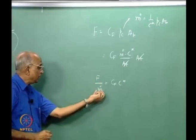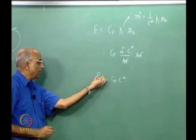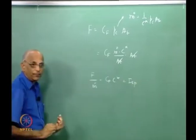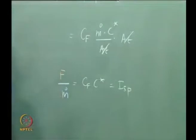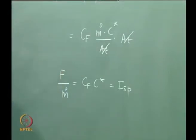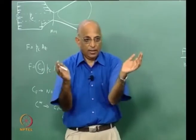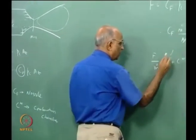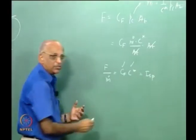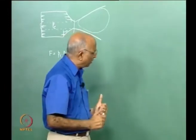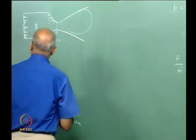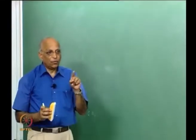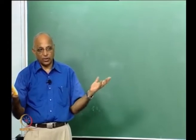To summarize: ISP = Cf × c*, where Cf is the nozzle factor and c* is the chamber factor. So I have a nozzle factor and a chamber factor whose product gives the net ISP. This answers the question of why we use c* and Cf separately and how they combine to give specific impulse.